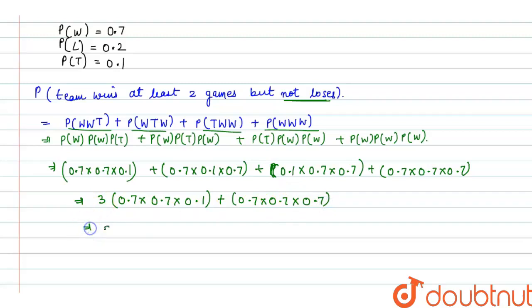Now when multiplied, 0.7 into 0.7 into 0.1 is 0.049 plus 0.7 cube is 0.343. So 0.147 plus 0.343, the final answer is 0.49.